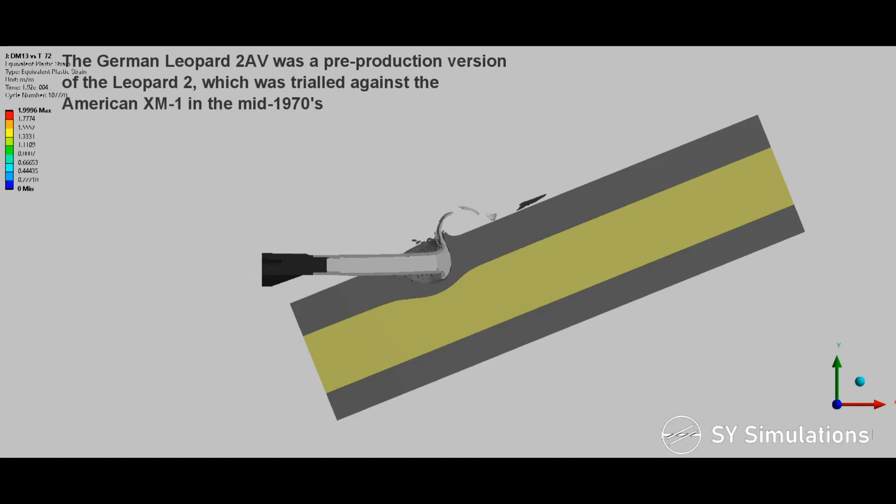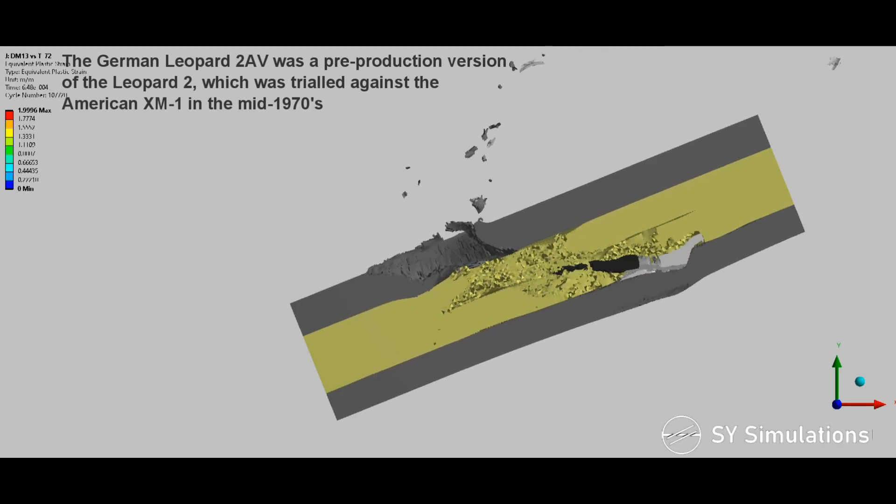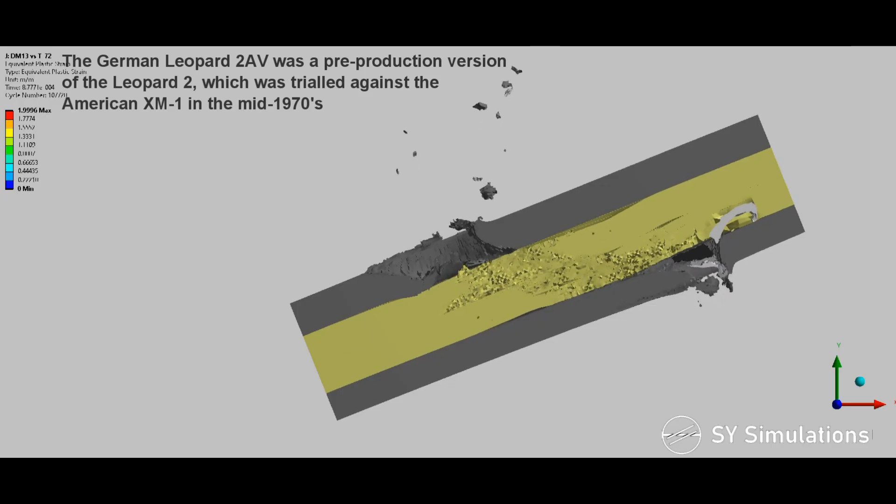The German Leopard 2AV was a pre-production version of the Leopard 2, which was trialed against the American XM1 in the mid-1970s.